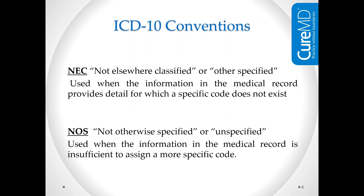In the ICD-10 conventions, we begin with NEC and NOS — abbreviations used throughout the code set, and they're true in ICD-9 or 10. NEC means 'not elsewhere classified or classifiable,' synonymous with 'other specified' or just 'other.' This is used when the information in the medical record provides detail for which a specific code does not exist. If a provider documents a condition and I can't find a specific code, I would look for the code that says 'other specified' or NEC. NOS is different — 'not otherwise specified,' synonymous with 'unspecified.' This is used when the information in the medical record is insufficient to assign a more specific code.